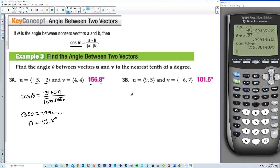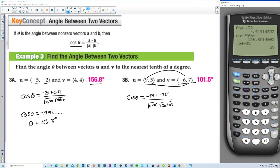Let's try 3b. Cosine of theta equals the dot product. So negative 54 and then negative 35. Square root of 81 plus 25, that's the magnitude of u times the magnitude of v, which is 36 plus 49. Let's go negative 54 minus 35. We're going to divide by square root of 106, and then divide by square root of 85. We get something that is between negative 1 and 1.